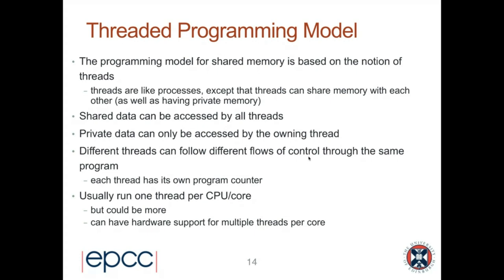There's nothing to stop us running more threads — the operating system will happily allow you to run many more threads than you have cores, and it will attempt to timeshare between threads, giving every thread fair access to the cores. Modern hardware also has hardware support for multiple threads per core. This is called simultaneous multi-threading, also known as hyper-threading, which is Intel's proprietary term for this feature.